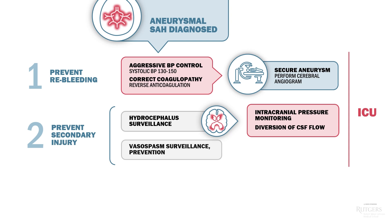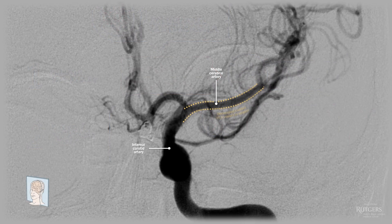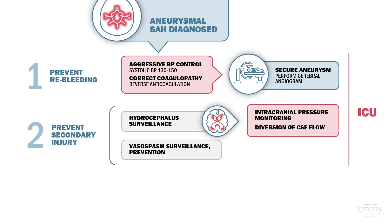In the next days to weeks, decomposing blood in the subarachnoid space may also irritate the walls of blood vessels which travel through that space. This irritation may result in vasospasm. And where there's spasm, there's potential for decreased blood flow and delayed cerebral ischemia.